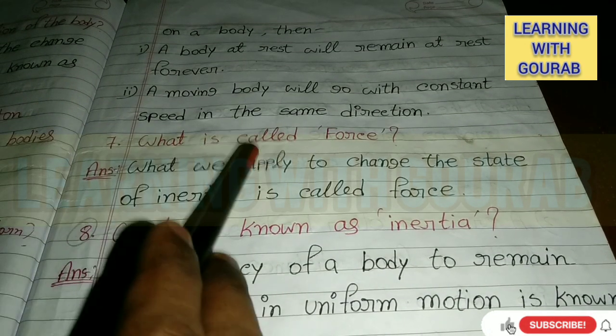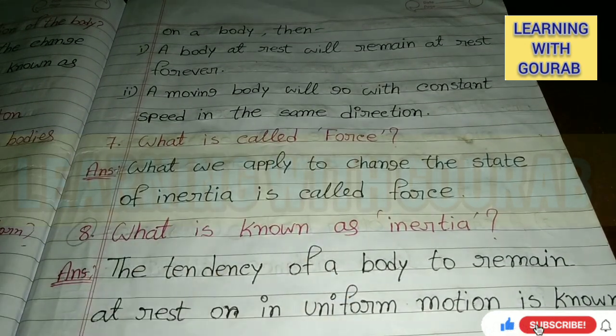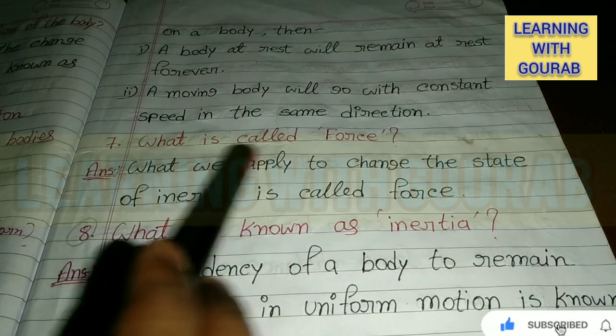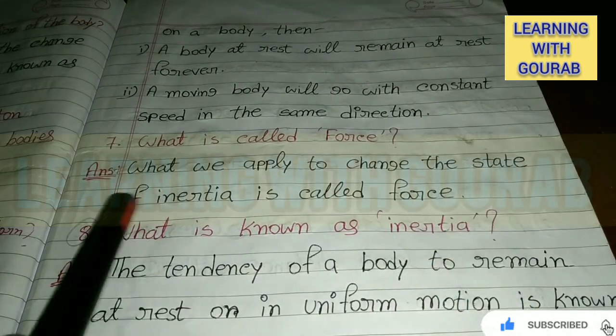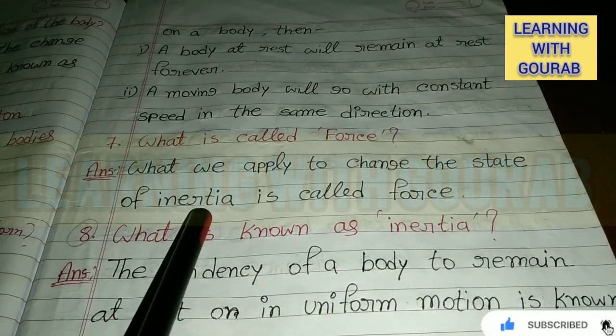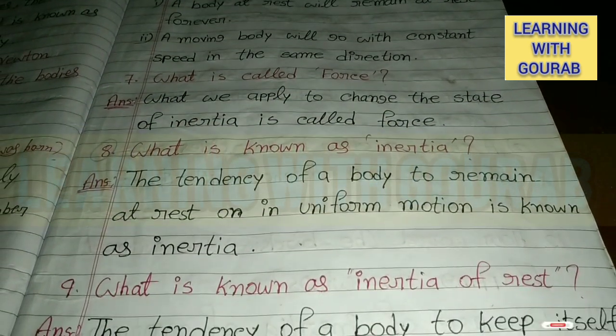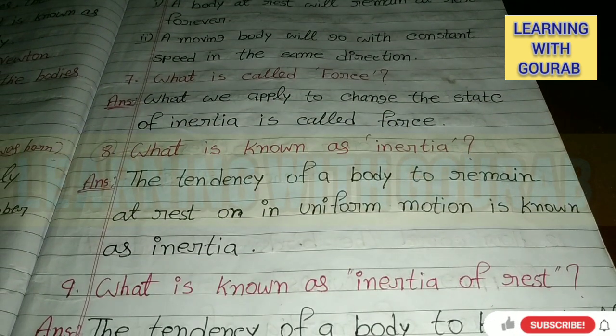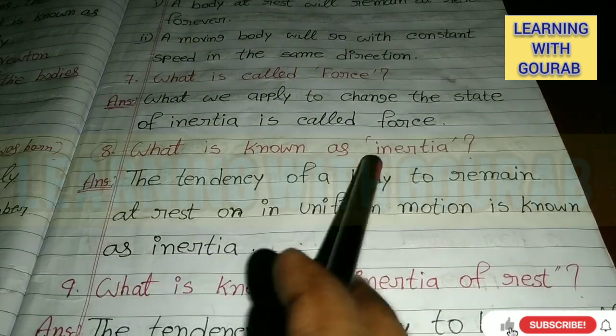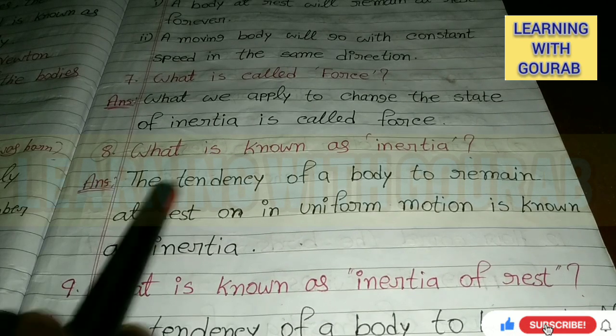What is called force? Answer: What we apply to change the state of inertia is called force. Next: What is known as inertia? Answer: The tendency of a body to remain at rest or in uniform motion is known as inertia.